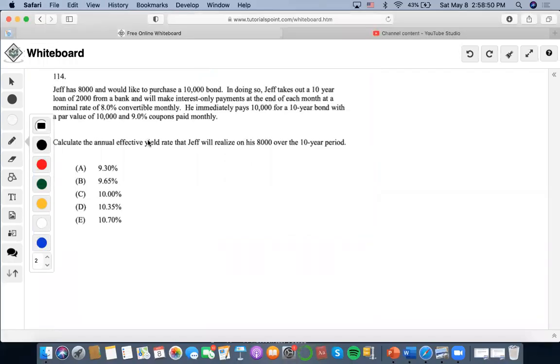Hi. So this one says Jeff has $8,000 and would like to purchase a $10,000 bond. In doing so, Jeff takes out a 10-year loan of $2,000 from a bank and will make interest-only payments at the end of each month at a nominal rate of 8% convertible monthly. Calculate the annual yield rate that Jeff will realize on his $8,000 over the 10-year period.